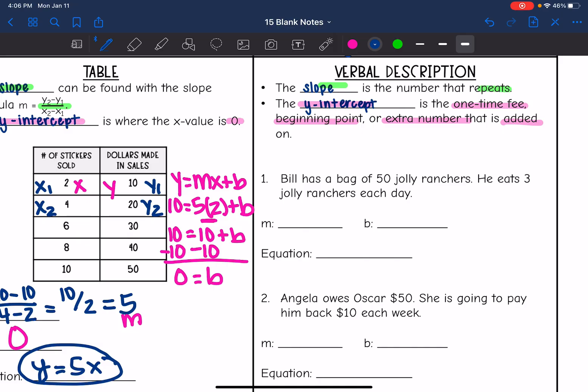Let's look at number 1. Bill has a bag of 50 Jolly Ranchers. He eats three Jolly Ranchers each day. So obviously he is beginning with 50 Jolly Ranchers. And then he is eating three Jolly Ranchers each day. So I know three is going to be my slope. Let's think about if it's going to be positive or negative. So he's not adding three to this bag of 50. He is taking away three. So the slope is going to be negative three. So then our equation would be y equals negative 3x plus 50.